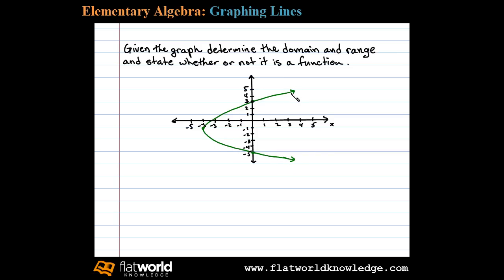From the graph we can see this point is at negative 4 comma negative 1. Therefore the minimum x value represented on the graph is negative 4 and all other x values are greater than that. Therefore the domain is all real numbers greater than or equal to negative 4.